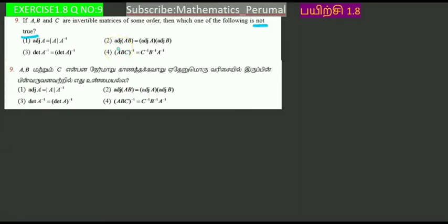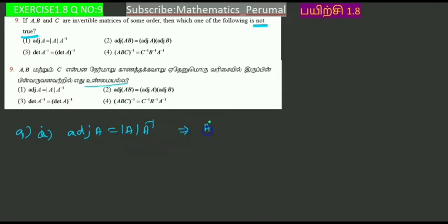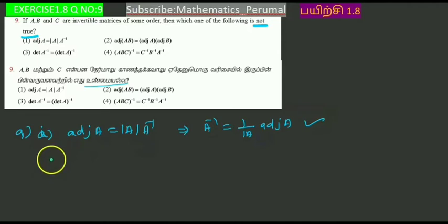First option: adjoint of A equals determinant of A into inverse. The formula is: inverse equals 1 by determinant of A into adjoint of A. That is correct. Then the second option: looking at option D — A transpose A P.